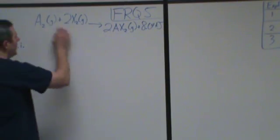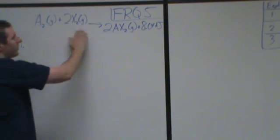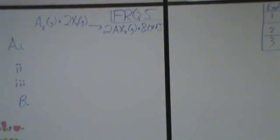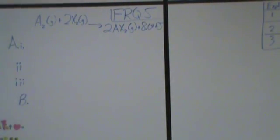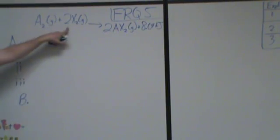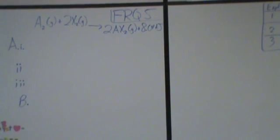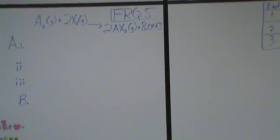So this is our reaction: A2 plus 2X2 makes two AX2s, all gases, and then energy is released. The first question says, comment on the strength of the bonds of the reactants compared to the bonds of the products. And what that's getting at is that there's different bond strengths in the different chemicals, and if you add up all the energy gained by bonding from one side, it'll be different than the other.